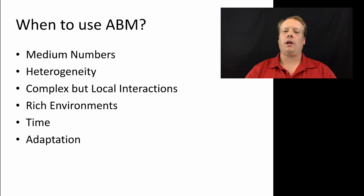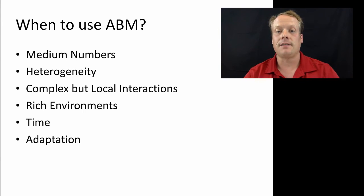Now that we've gone through all six conditions, it's useful to look back at the overall list. I often suggest doing this before deciding whether or not you want to use agent-based modeling to understand a problem. Take these first four indicators: medium numbers, heterogeneity, complex but local interactions, and rich environments. The more of these that the system you want to study possesses, the more likely it is that agent-based modeling is going to be useful to you.